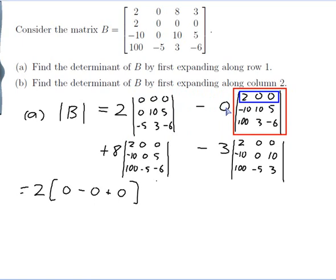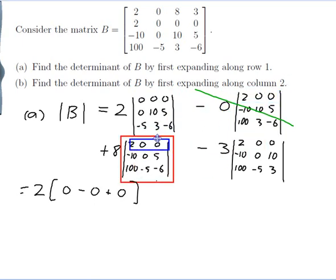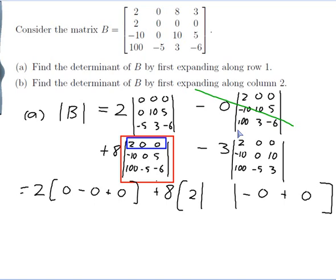For the plus 8 term, I expand along its first row. The first row is 2, 0, 0, so I get 2 times a 2x2 determinant, minus 0, plus 0. I only need the first 2x2 determinant. I look at the 2, cross out its row and column, and what's left is: 0, 5 / minus 5, minus 6.